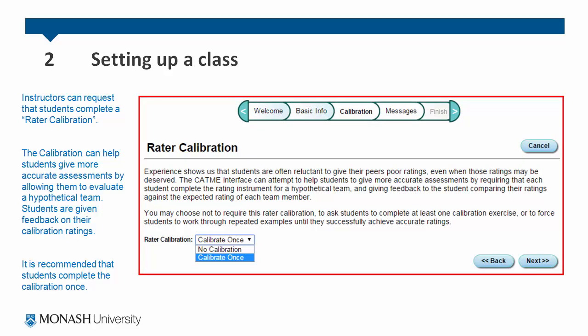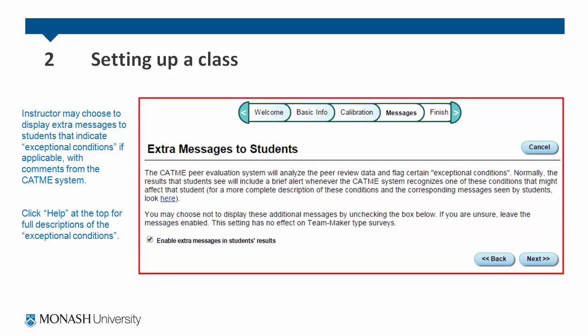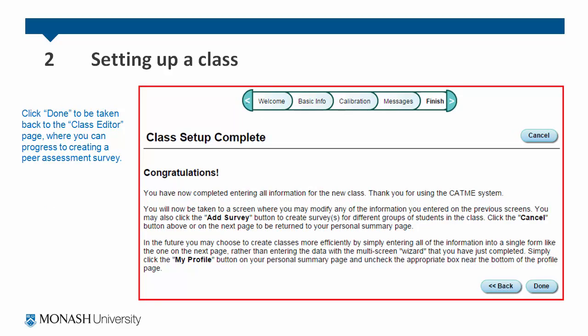Instructors can request that students complete a rater calibration. The calibration can help students give more accurate assessments by allowing them to evaluate a hypothetical team. Students are then given feedback on the calibration ratings, and it's recommended that students complete the calibration at least once. You may also choose to display extra messages to students indicating exceptional conditions, with comments from the CATME system. Click help at the top of the page for full descriptions of what these exceptional conditions are. Click done to be taken back to the class editor page.